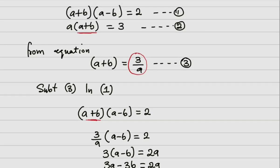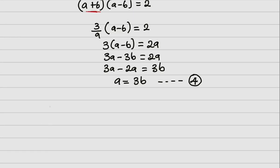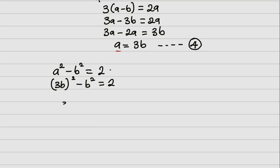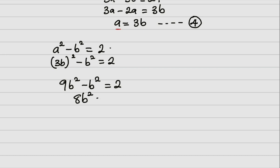Now I need to recall that from equation one we are given a² minus b² equals two. Since a equals 3b from equation four, I'll substitute, so I have (3b)² minus b² equals two. This gives 9b² minus b² equals two, so 8b² equals two.